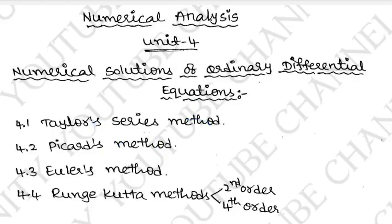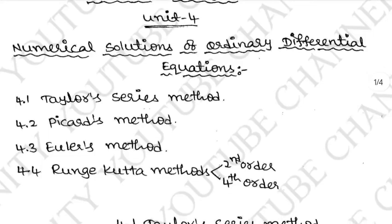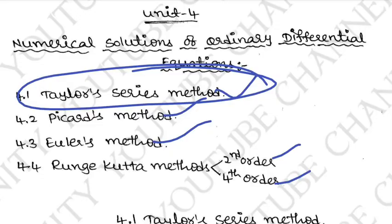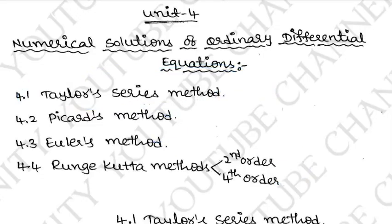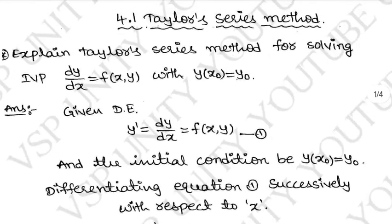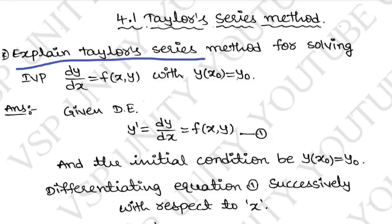In Unit 4 we have to explain these five methods: 1, 2, 3, 4, 5. We will complete the Taylor series method in this video. This is the short question: Explain the Taylor series method for solving the initial value problem (IVP).